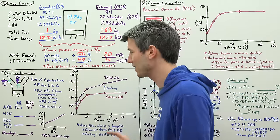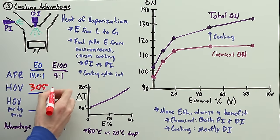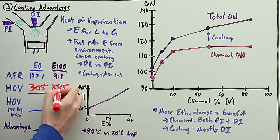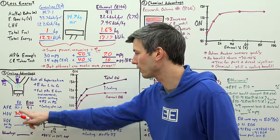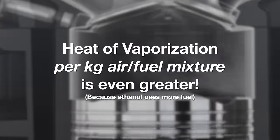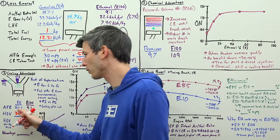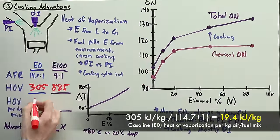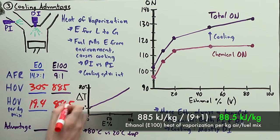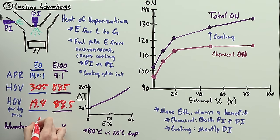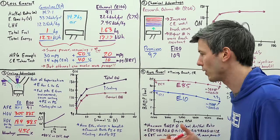Now ethanol has an advantage in its heat of vaporization versus gasoline. So if we look at that number for gasoline, it's 305 kilojoules per kilogram of fuel versus ethanol, it's 885 kilojoules per kilogram of fuel, which you can see is much greater. Now keep in mind we're injecting even more fuel versus gasoline for the same amount of air. So if we look at the heat of vaporization per kilogram of air-fuel mixture, that number is even greater for ethanol. So if you take 305 and you divide it by 14.7 plus 1, that gives you 19.4. And if you take 885 and divide it by 9 plus 1, that gives you 88.5. And if you take this number and divide it by this number, that means you have a 4.56 times advantage as far as heat of vaporization. Now what does this translate to as far as a temperature drop?